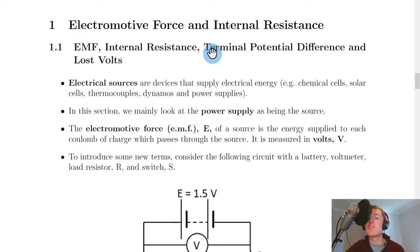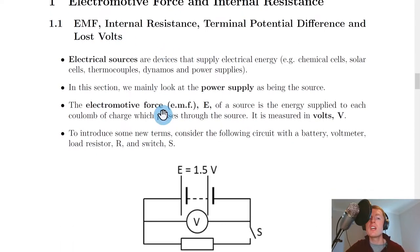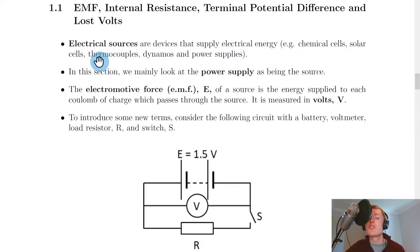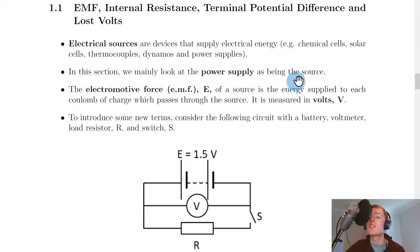The new terms we'll look at are EMF, internal resistance, terminal potential difference, and lost volts, among a few others. The first thing to look at is what is meant by an electrical source. Electrical sources are devices that supply electrical energy — for example, chemical cells, solar cells, thermocouples, dynamos, and power supplies.